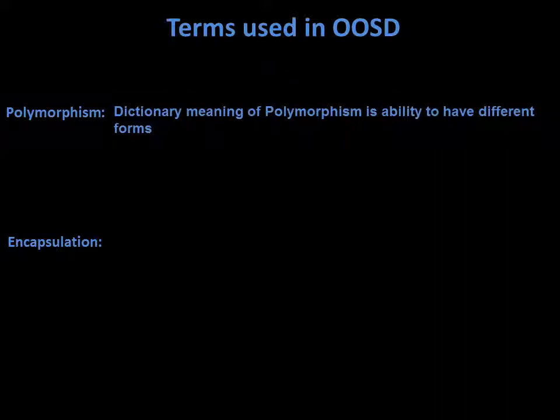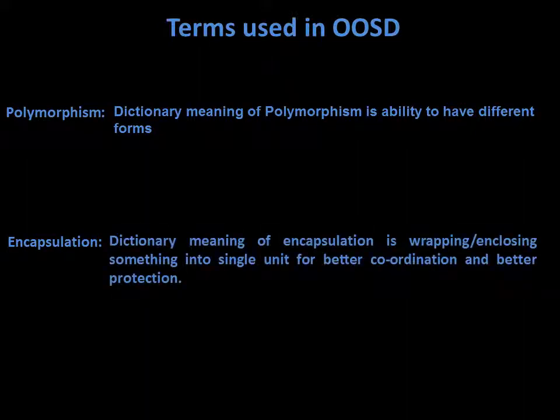For the SESA exam we need to remember these two terms and their dictionary meaning. Polymorphism: the ability to have different forms. Encapsulation: a technique to wrap and close something into a single unit, for better coordination between things and better protection.